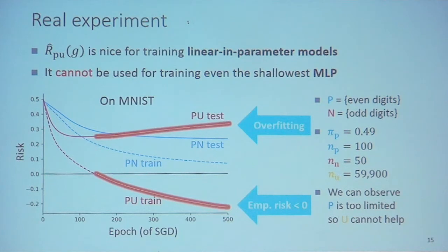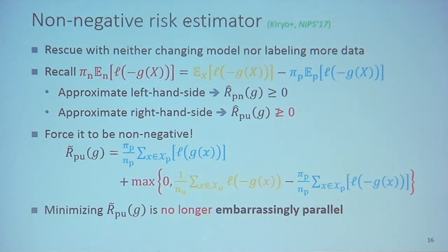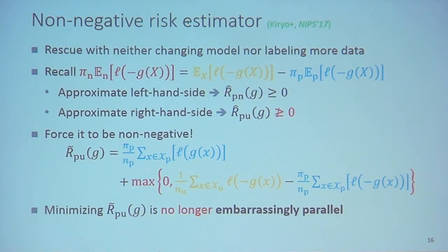We propose a rescue without changing the model or labeling more data. Recall we have this identity: if we approximate the left-hand side of the equation as in PU learning, the empirical version is non-negative; but approximating the right-hand side in PU learning is not guaranteed to be non-negative. Our idea is simple: just force it to be non-negative. After we add a max operator, this learning objective is not pointwise, so we need a trick to train it by SGD.